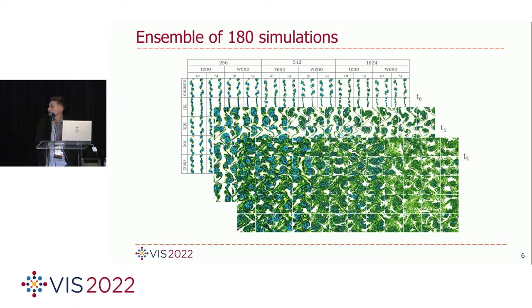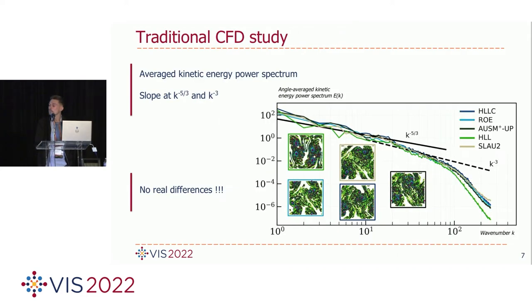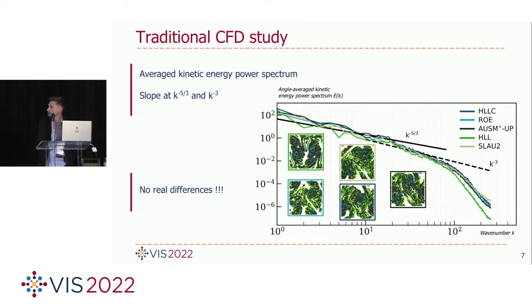When you have this type of turbulence, engineers in computational dynamics use traditional approaches based on averaged quantities — many times a kinetic energy power spectrum. If you make your average and have a slope equal to k to the power of minus 5/3 or k to the power of minus 3, we can consider the turbulent flow gives a physically valid solution. But looking at the graph, you can see there's no real difference between the different solvers. Just for the HLL solver, we can see a little difference compared to the others. And looking at the terrain view, you can see all the vortices are not at the same placement in the simulations — it's very difficult for engineers to understand and analyze all the structures of the turbulence.